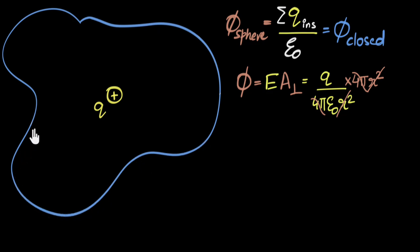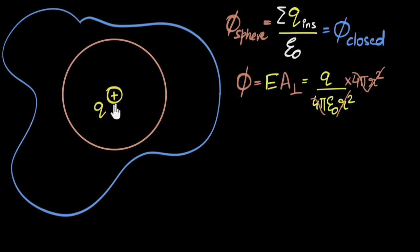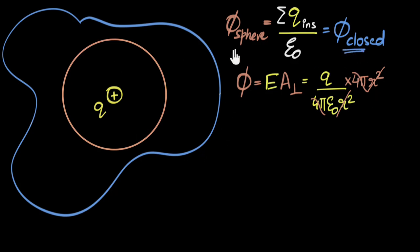Even though we're calculating the flux through this big surface, let's still imagine a tiny sphere of any radius, centered at that charge. We know the flux through this sphere is q by epsilon naught. All we have to prove is that the flux through the big surface is exactly the same as the flux through the sphere. If we can prove that, then we can say the flux through the big closed surface equals q divided by epsilon naught.